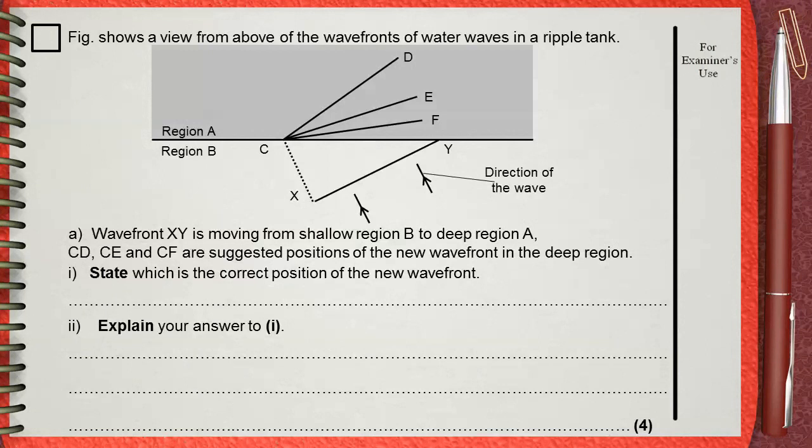The figure shows a view from above of the wavefronts of water waves in a ripple tank. Wavefront XY is moving from shallow region B to deep region A. CD, CE, and CF are suggested positions of the new wavefront in the deep region. State which is the correct position of the new wavefront and explain your answer.